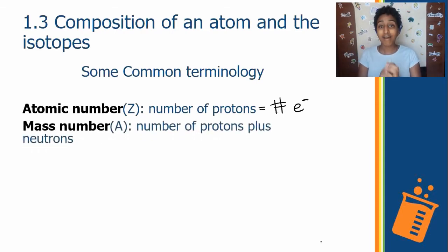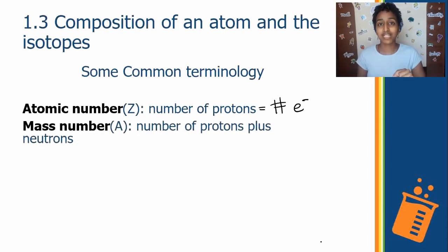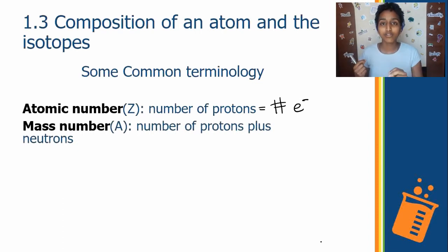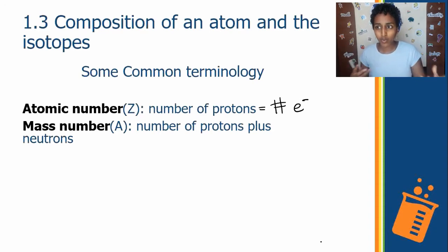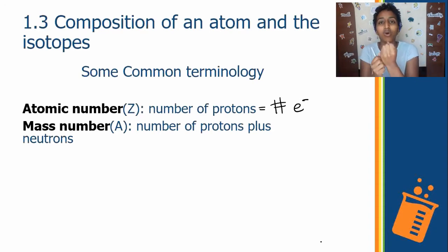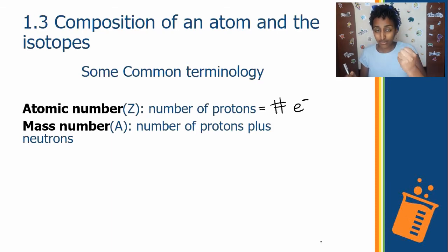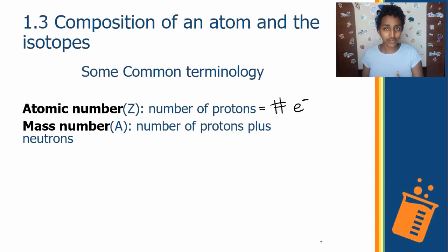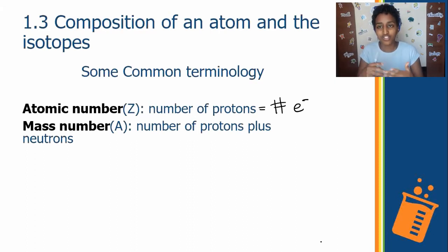Next, we have mass number. Mass number is represented by A, and it's the number of protons plus the number of neutrons. To remember which particles to add, just think of whatever is in the nucleus — the protons and neutrons. Therefore, mass number is simply the sum of those two.